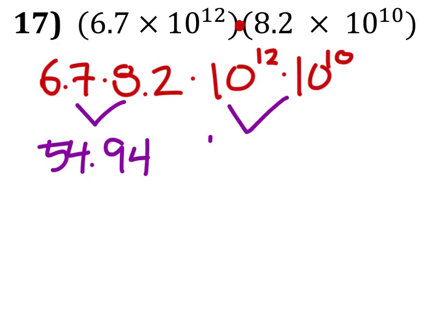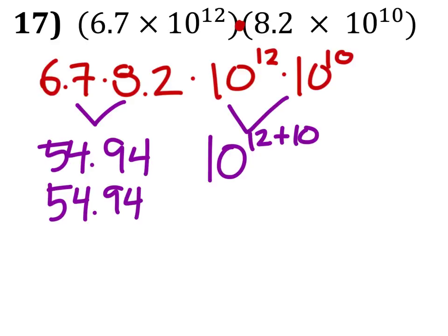And then I take my base tens and just use my exponent rules. In this case the product rule where I take the powers and add them. So I've got 54.94 times 10 to the power of 22 now.